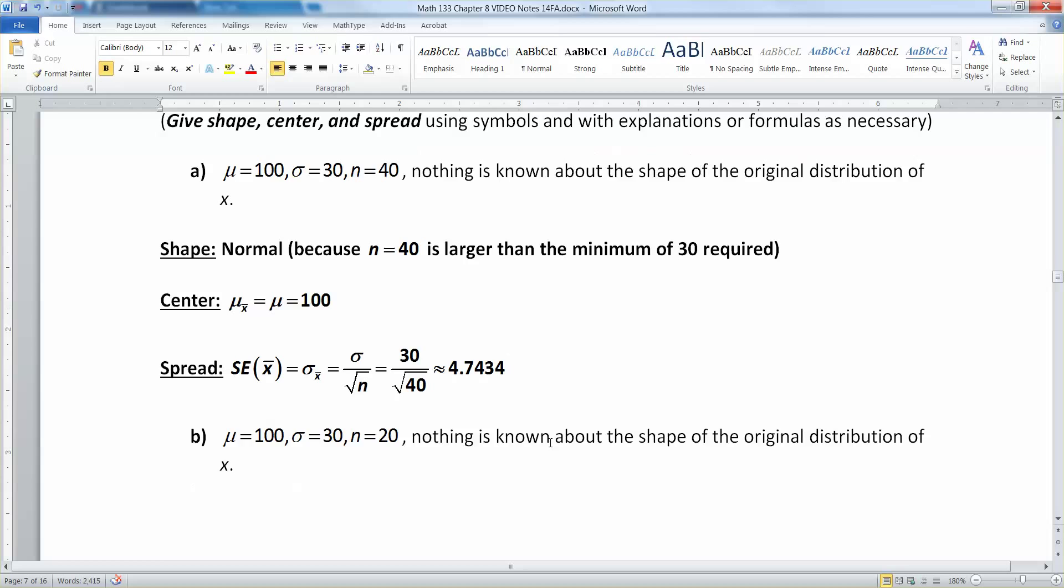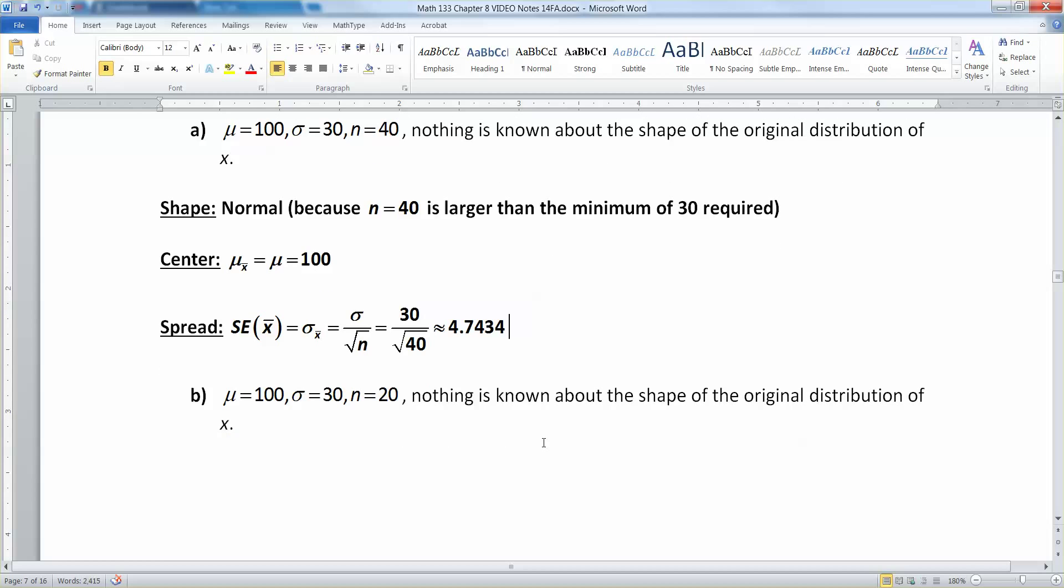Now this one looks very similar. The mean is 100, sigma is 30, and now n is equal to 20. We still don't know anything about the shape of the original distribution of x. But that's a problem because our sample size isn't large enough to guarantee, it's not really guaranteed but it's a rule of thumb, that the distribution will be normal. Therefore, all bets are off. We don't know if the shape of this is normal.